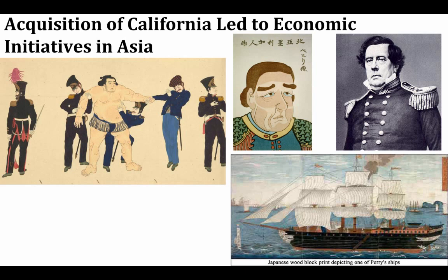Now that America does have their territory in California, they're able to access the Asian markets that were so sought after. We're going to see America aggressively promoting trade in Asia as a result of that acquisition. The Americans send Commodore Perry to Japan to open up the Japanese markets to American trade. This is done somewhat through intimidation with advanced American warships, and Japan at this point is still very isolated with samurai still controlling parts of Japan. Japan is forced to allow Americans to trade, and Japan decides to westernize and modernize as quickly as possible — which will come back to bite us in World War II. Because of California, we do have economic access to these Asian markets.